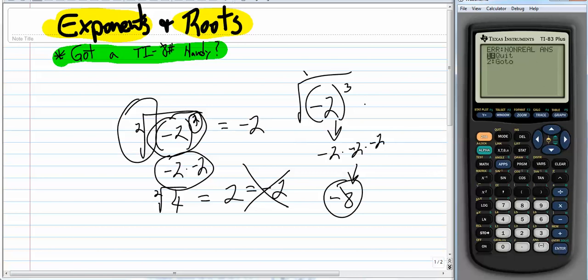So, a lot of textbooks will say, well, whenever you do this root stuff, we're assuming that you have a positive number in the radical. But, I think that's a little bit farther than we need to go in this video. So, I'm going to stop right there.